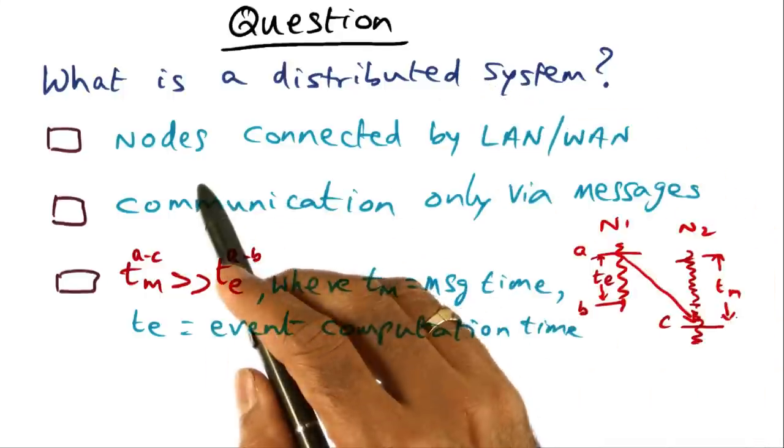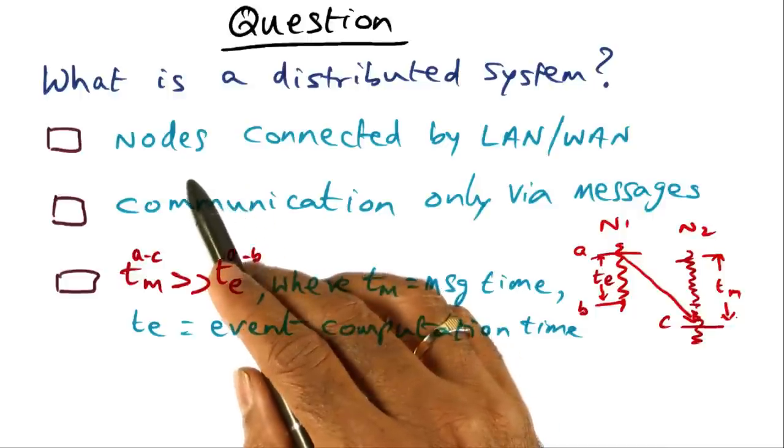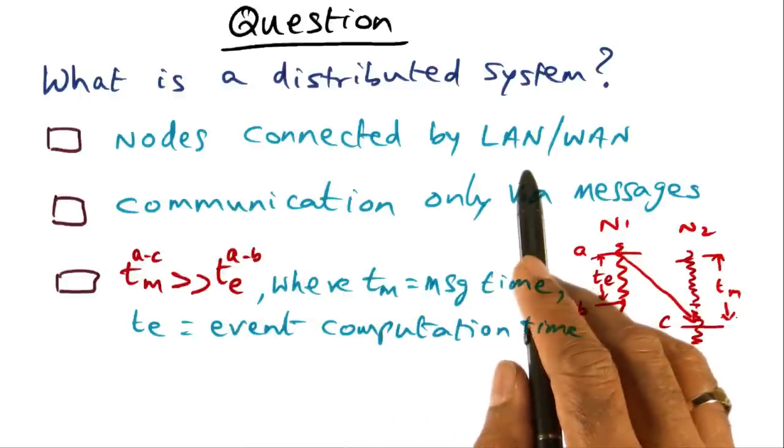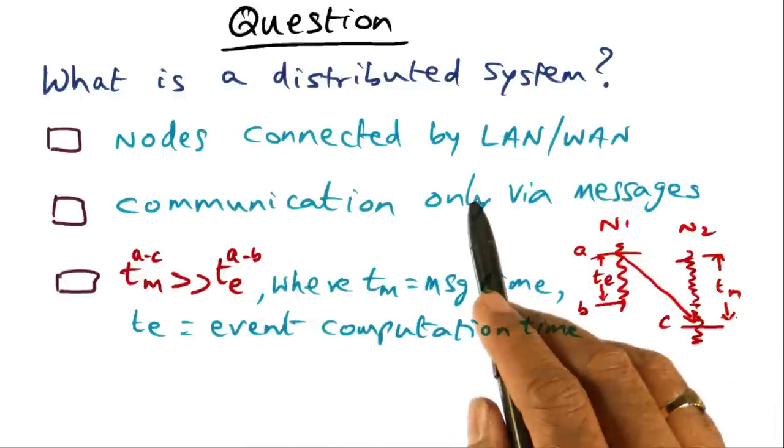The first choice says that a distributed system is a collection of nodes connected by a local area network or a wide area network.